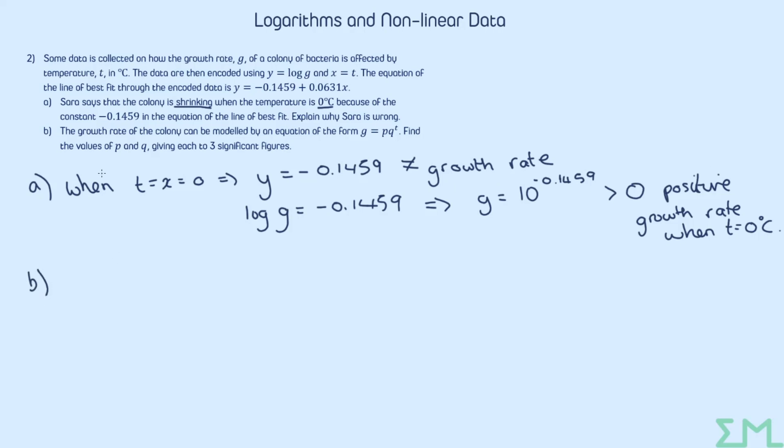Right, part B then. The growth rate can be modelled by the equation of the form G equals PQ to the T. So this is an example of an exponential equation just as we suspected based on the fact that we only had the dependent variable that had a log applied to it. So this is where we're going to do that comparison like we did in the last question. We're going to need to turn the original model equation into a linear one using logs. So log G equals log P plus T log Q.